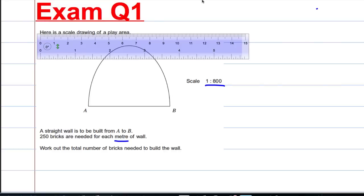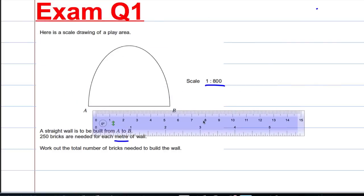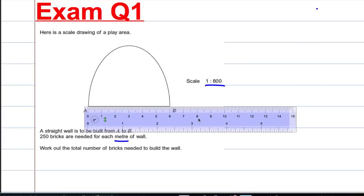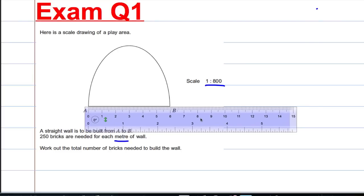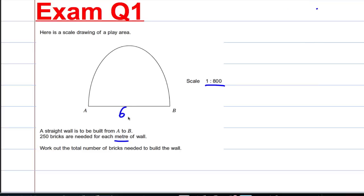First thing you need to do is get your ruler out. In this particular case, if you get your ruler out, you'll find that that's 6 centimetres. Now, every 1 centimetre must be 800 centimetres in the real world, so 6 centimetres must be 6 lots of this, which is 4800 centimetres. Divide them by 100, this must be equal to 48 metres.